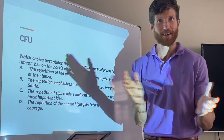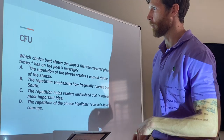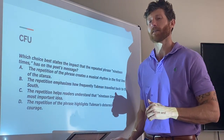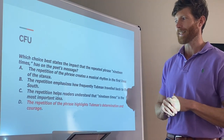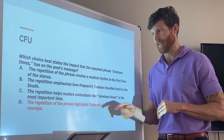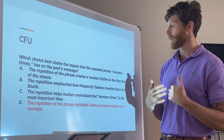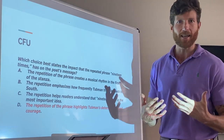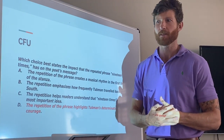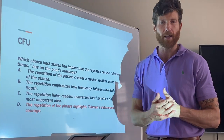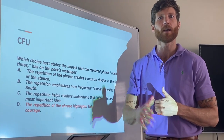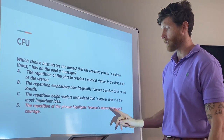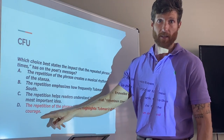Welcome back. We're going to go over the CFU. Which choice best states the impact that the repeated phrase 'nineteen times' has on the poet's message? The correct answer is D: the repetition of the phrase highlights Tubman's determination and courage. We see that nineteen times she went back to the south — she risked her life, went into a dangerous situation just to help others. The author repeats that phrase nineteen times because he really wants you to see how determined and courageous Harriet Tubman is.